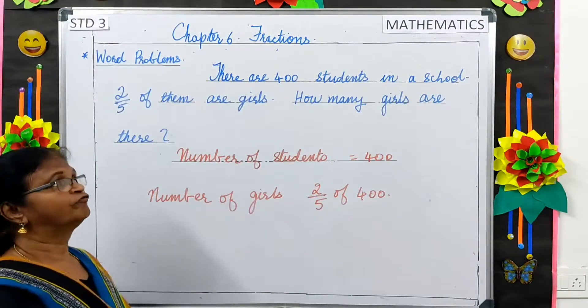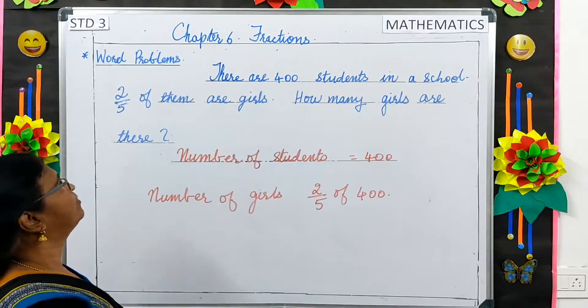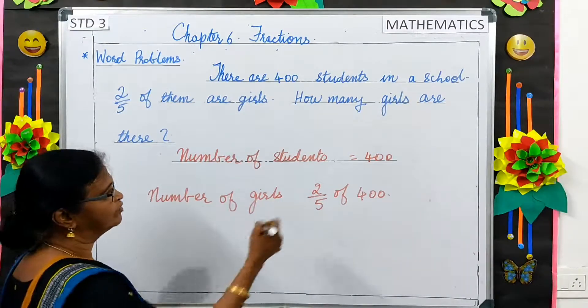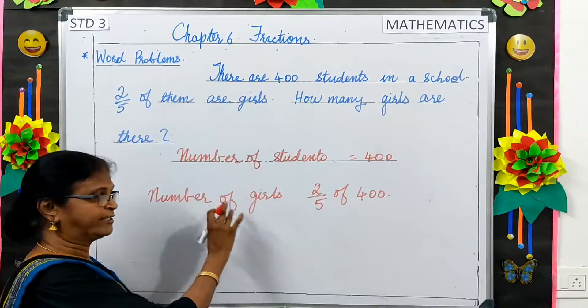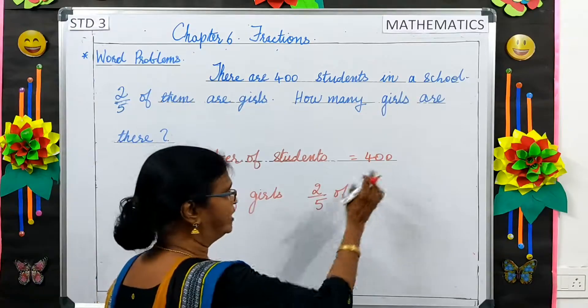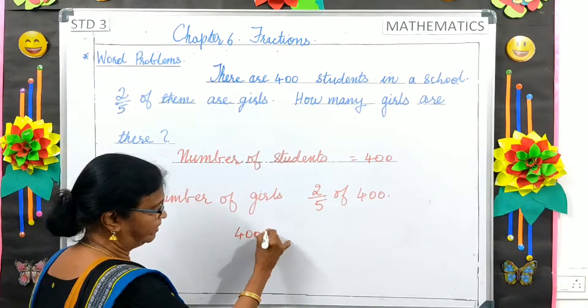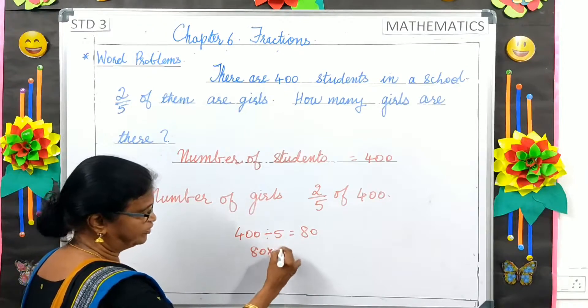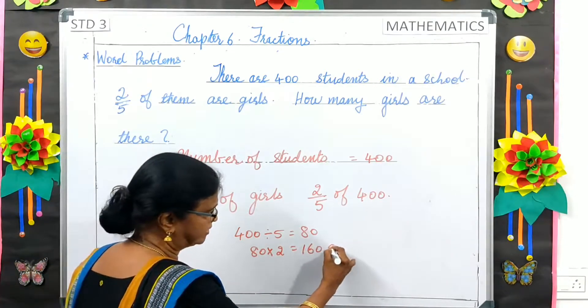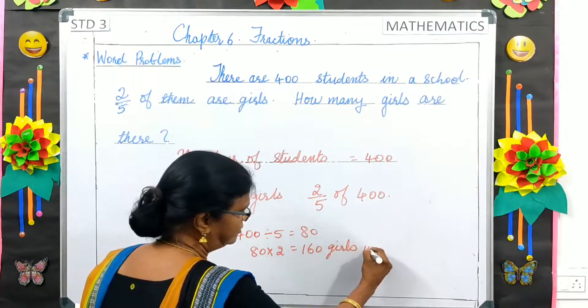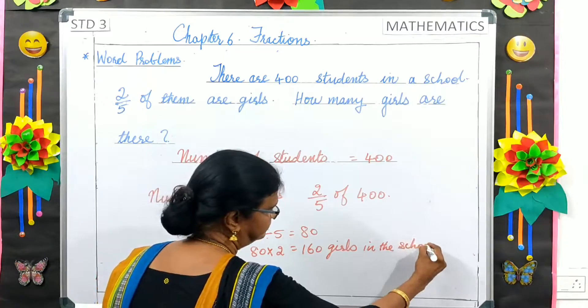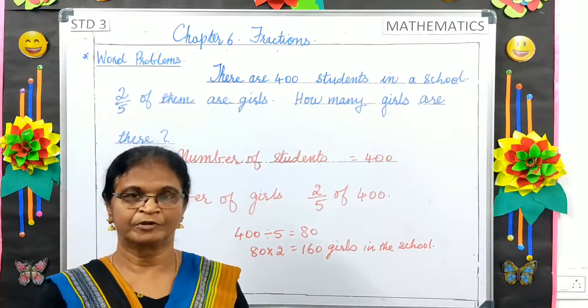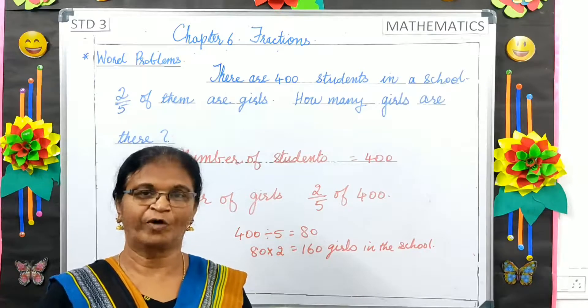There are 400 students in a school. 2 by 5 of them are girls. How many girls are there? So, total number of students, 400. Number of girls, a fraction of girls, 2 by 5 of 400. 400 divided by 5 is 80. 80 multiplied by 2, 160. So, 160 girls in the school. 160 out of 400 are girls. So, please revise whatever we have done today.